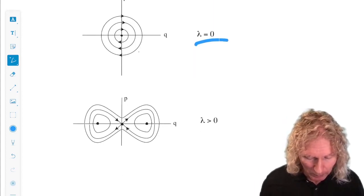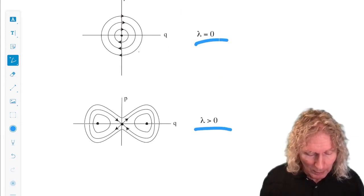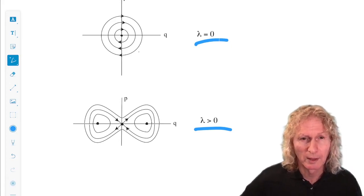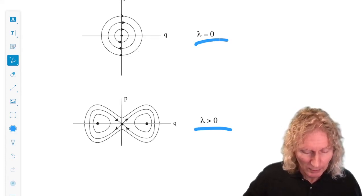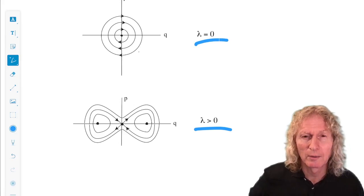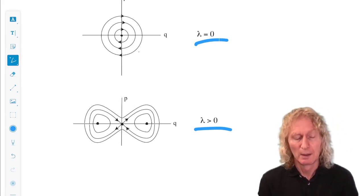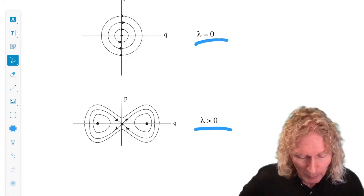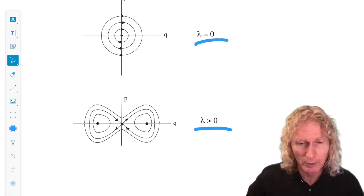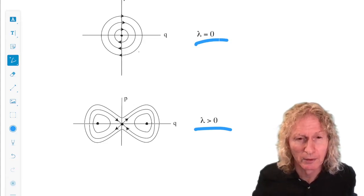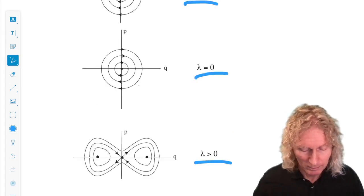And then it splits up into three, a saddle and two stable points, two centers on the side. The classic figure eight-type structure that we've seen in different settings, but not the Hamiltonian setting. So this Hamiltonian is kind of underlying many of the examples that I did earlier, and so it would be useful for you to go back and look at those. Examples that came up for the LaSalle invariance principle and then the linearization stability section.